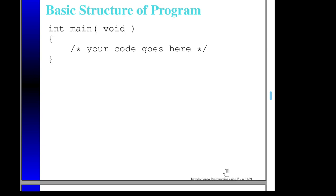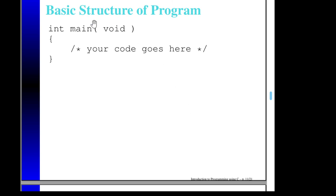What does a program look like? This is the basic structure of a program — in fact, this would be considered a legal C program even though it really doesn't do anything. Every program we write will say 'int main(void)', we'll have a set of matching curly brackets, and we'll have code between the curly brackets. What's in the middle here is an example of a comment in C. This is the simplest program I know how to write.